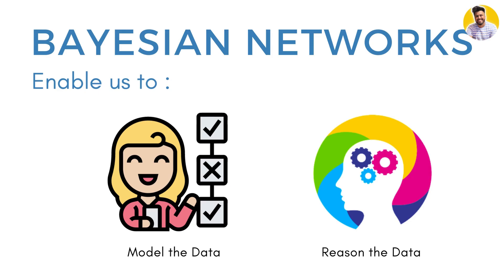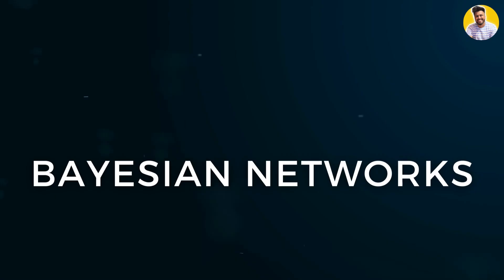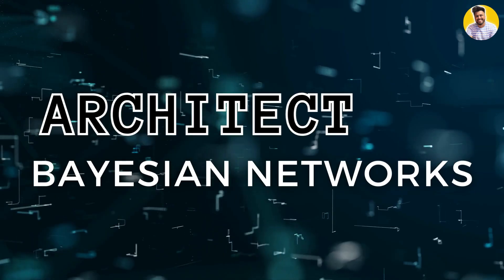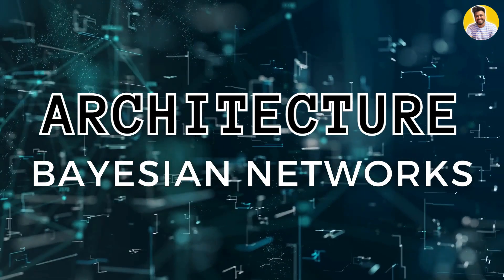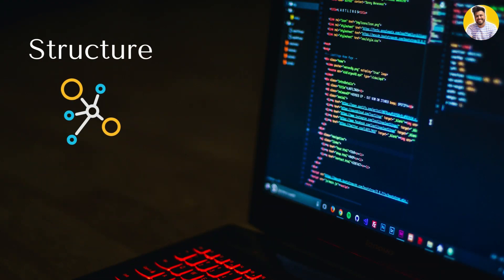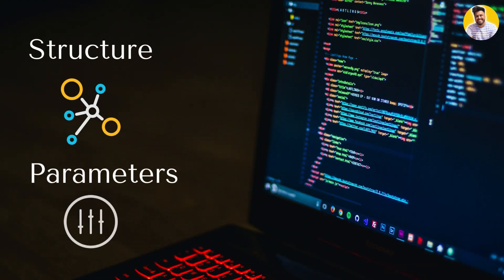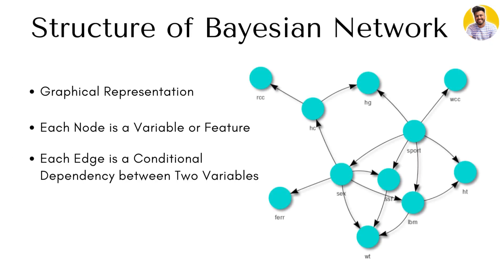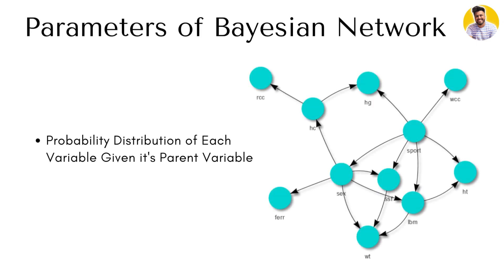This makes Bayesian networks ideal for decision-making scenarios. The architecture of Bayesian networks consists of two main parts: the first is structure, and the second is parameters. The structure represents the graphical representation of the dependencies between variables, while the parameters represent the probability distribution of each variable given its parent variable.